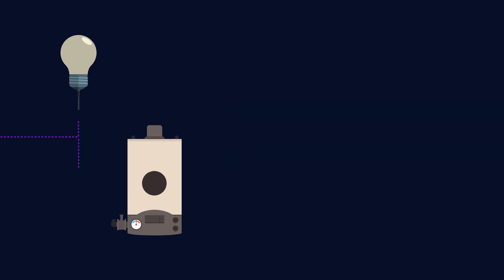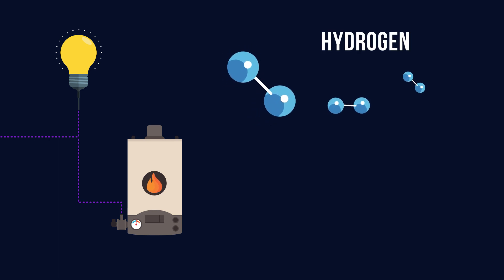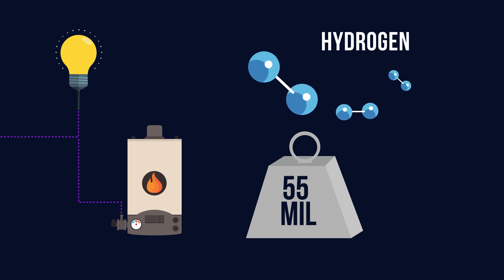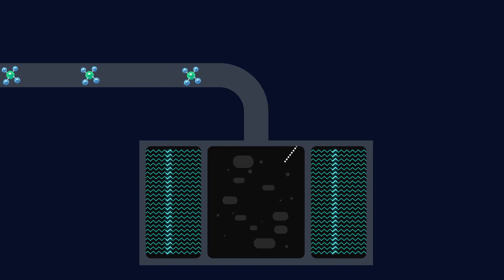Fuel cells are a cleaner way of generating electricity and heat. They often use hydrogen as a fuel. Currently, around 55 million tons of hydrogen are produced a year, mostly separated from natural gas using a process called steam methane reforming.